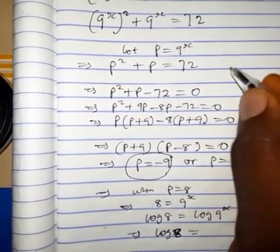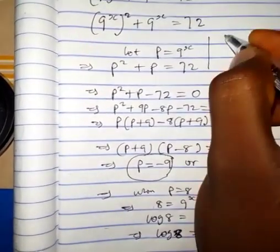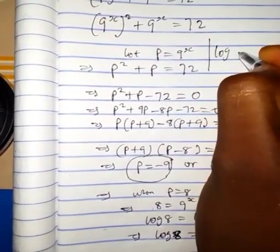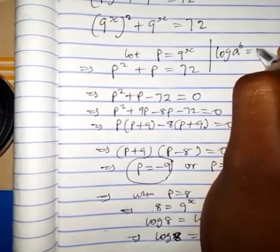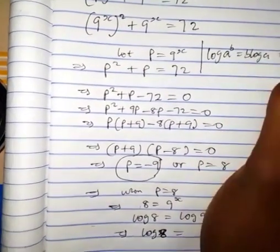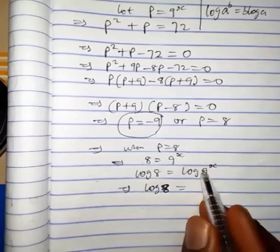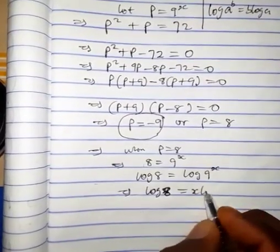Using the laws of logarithms, whenever we have log a to the power of b, we can write it as b log a. Applying this rule here, we have x log 9.